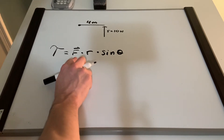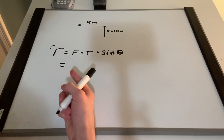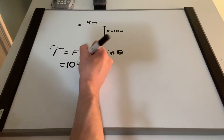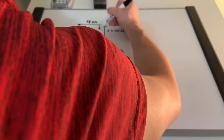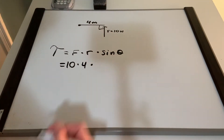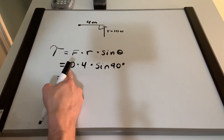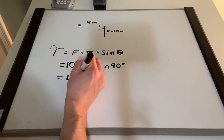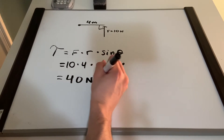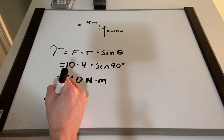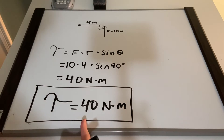So we can get rid of that vector notation — it's just the magnitude. So 10 newtons times our radius, 4 meters, and sine of the angle between them. There's a 90 degree angle between them; they are perpendicular. So sine of 90 degrees. 10 times 4 is 40, times 1 — that's just 1 on the unit circle, so it doesn't matter. Therefore, our torque is equal to 40 newton meters.